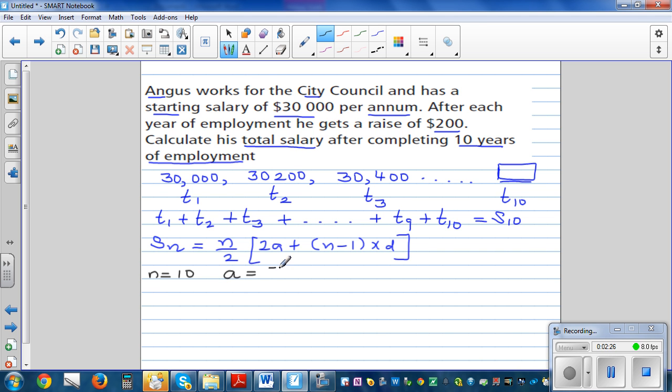What is a? a is the first term which is 30,000, and d is the common difference which is 200. So to just apply the formula, s10 is equal to 10 divided by 2, bracket, 2 times a which is 30,000 plus n which is again 10 minus 1 times d which is 200.